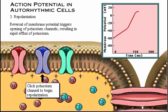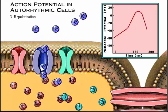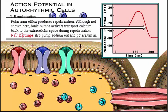This reversal of membrane potential triggers the opening of potassium channels, resulting in potassium rapidly leaving the cell. Click the potassium channel to see potassium efflux and the resulting repolarization. The potassium efflux produces repolarization, bringing the membrane potential back down to its resting level. Although not shown here, several other events take place during repolarization: ionic pumps actively transport calcium back to the extracellular space, while sodium-potassium pumps transport sodium out of the cell and bring potassium into the cell, thereby restoring ion concentrations to their resting levels.